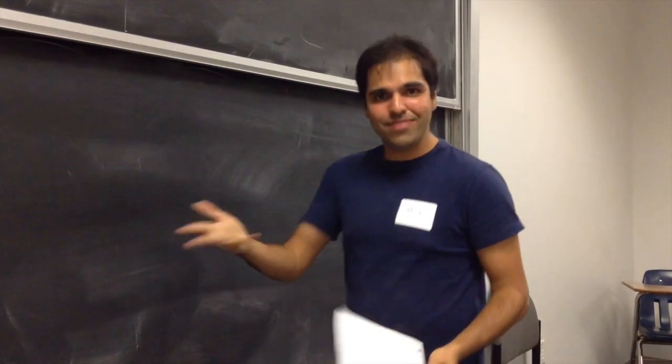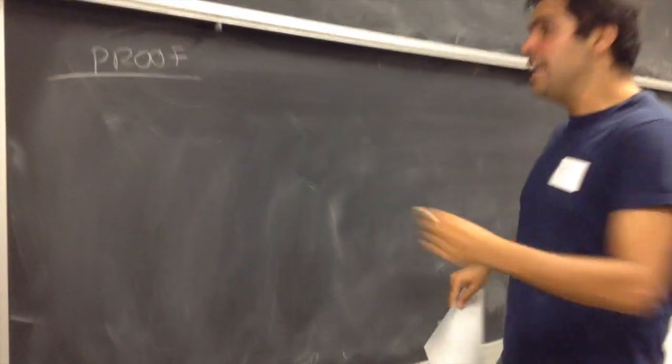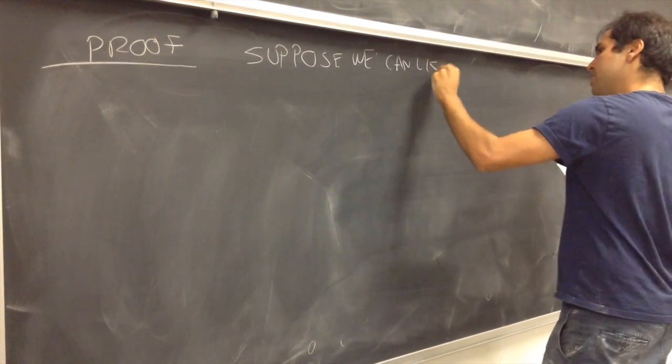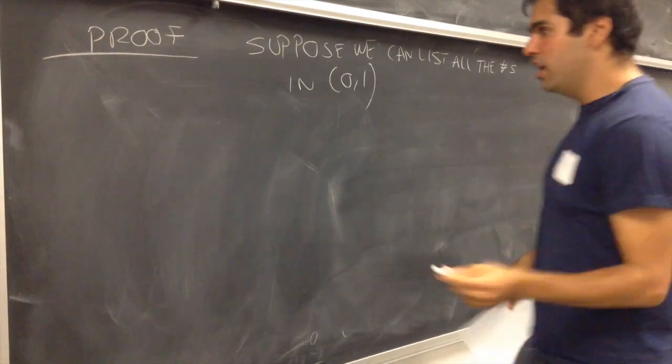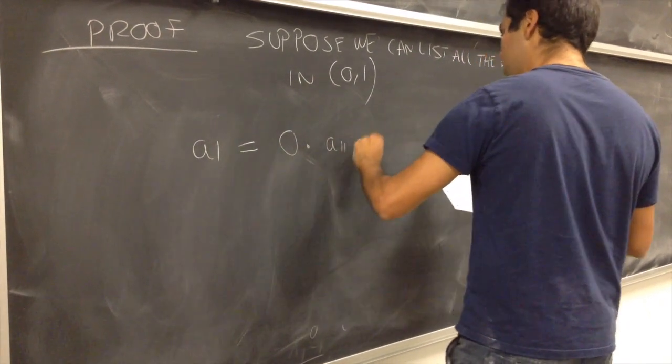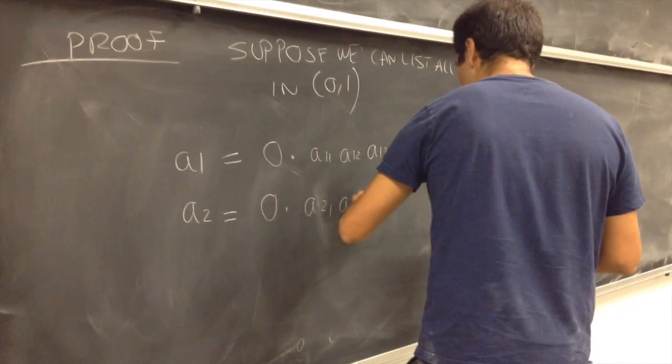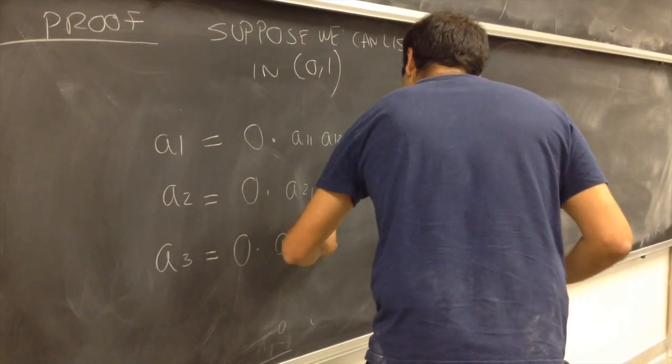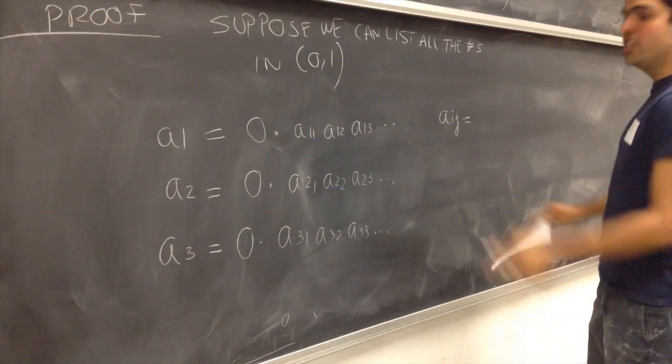And here's the proof, and it's based on this famous technique called the Cantor Diagonal Argument, and you'll see why. So, suppose we can list all the real numbers, or all the numbers between zero and one. List all the numbers in zero comma one. So, let's just write a list. So, A1, and let's just expand them in decimal notation. So, 0.A11, A12, A13, A2 is 0.A21, A22, A23, A3 is 0.A31, A32, A33, et cetera, where the Aij's are just digits between zero and nine.